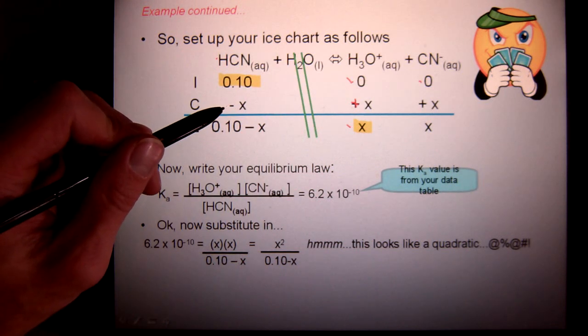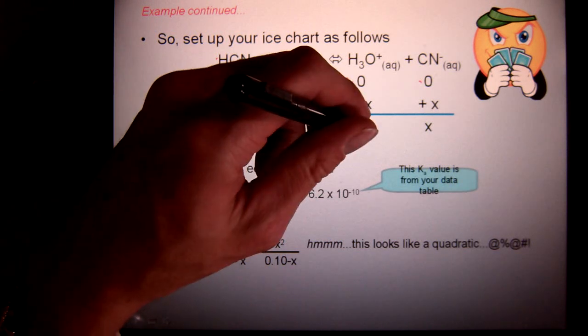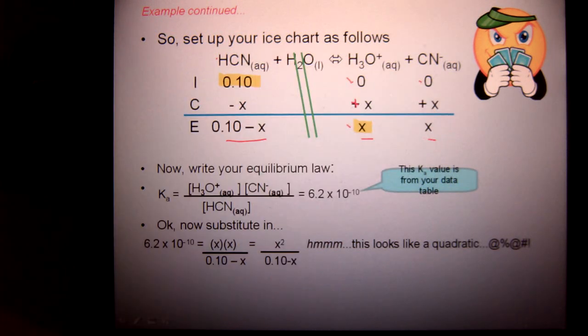But, as in the other ice charts, it's a reactant, so it will likely be decreasing. So, then I have this value. Those are my equilibrium values for all of my substances.